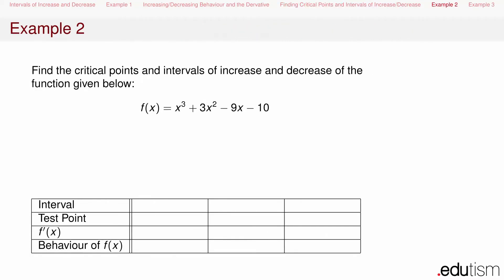I'll finish off this lesson with a couple of examples of this procedure. The first example: find the critical points and the intervals of increase and decrease of f(x) = x³ + 3x² - 9x - 10. The first step is to take the derivative, which gives us f'(x) = 3x² + 6x - 9.